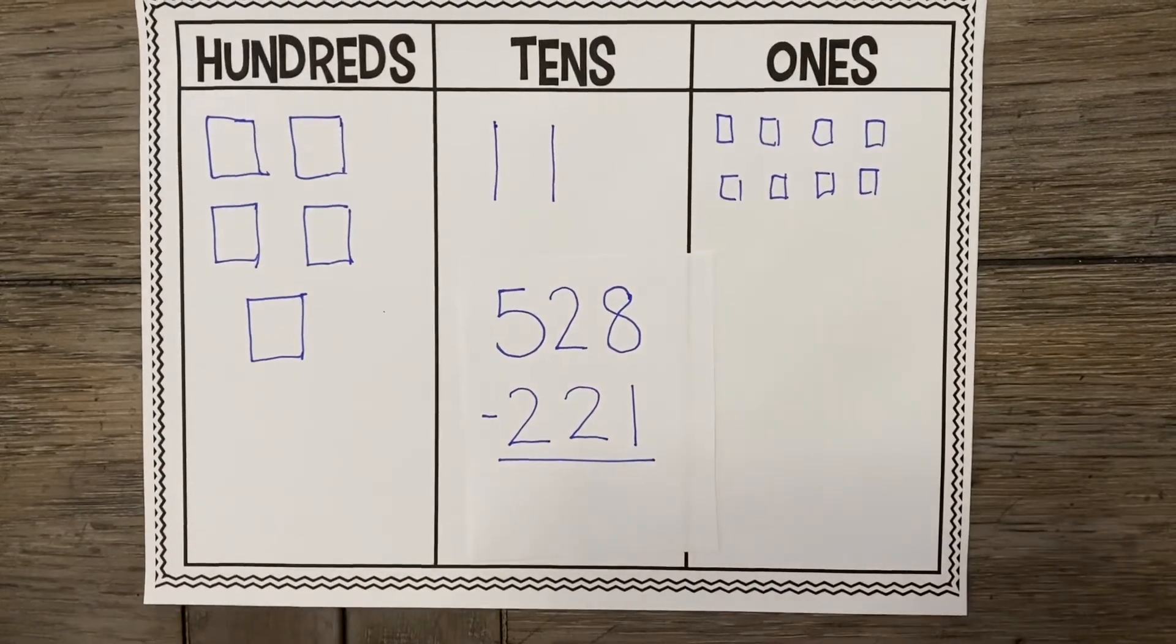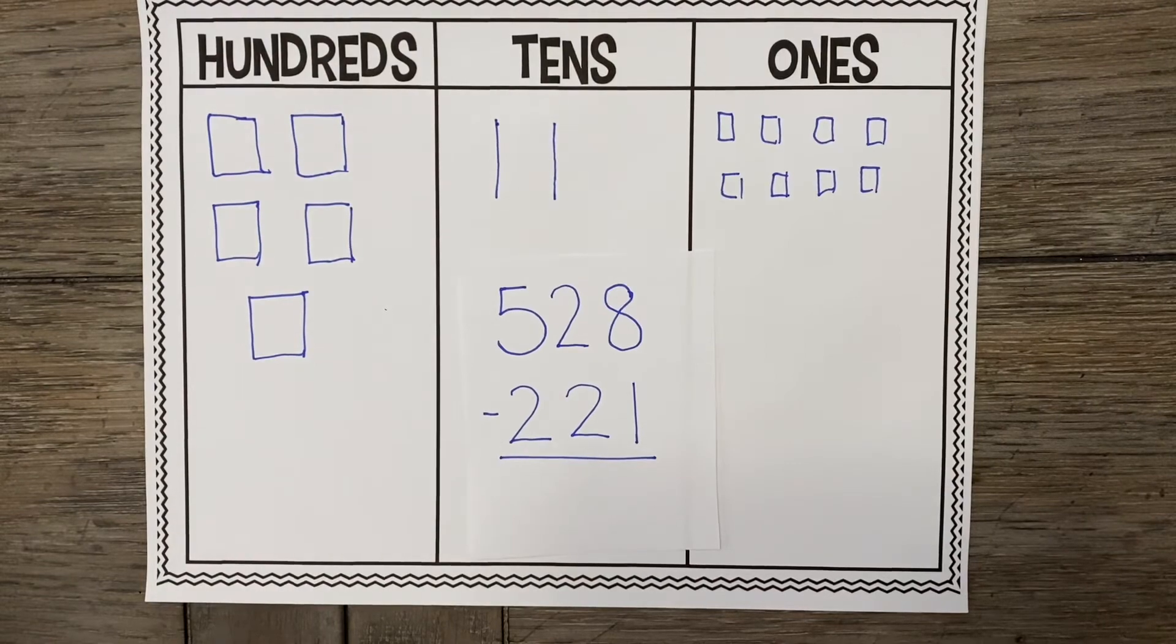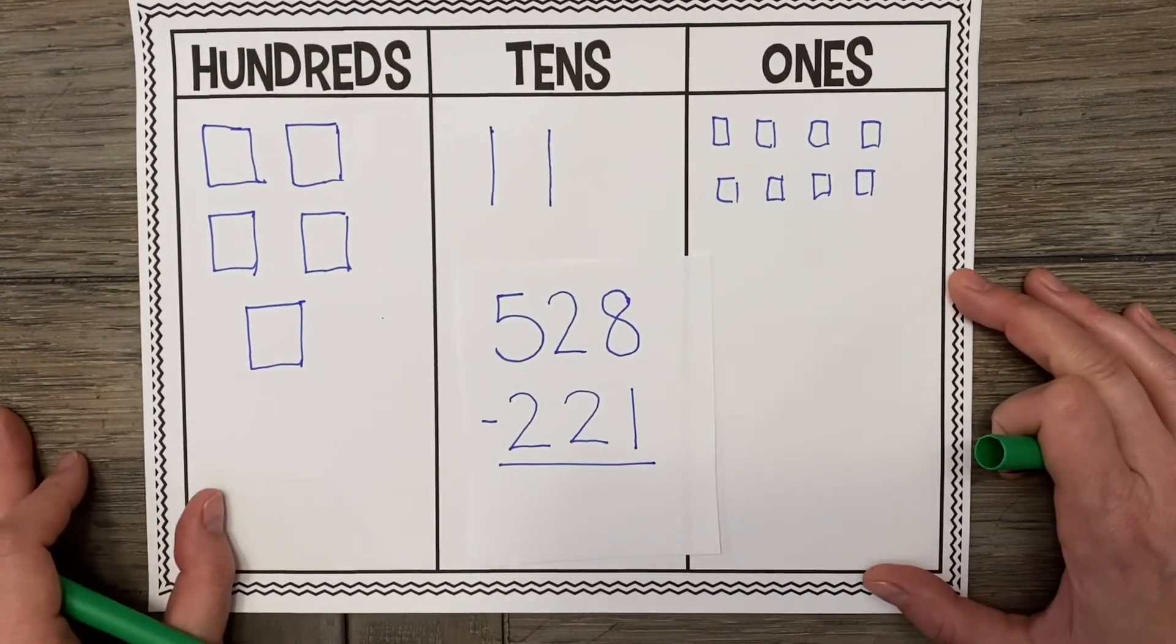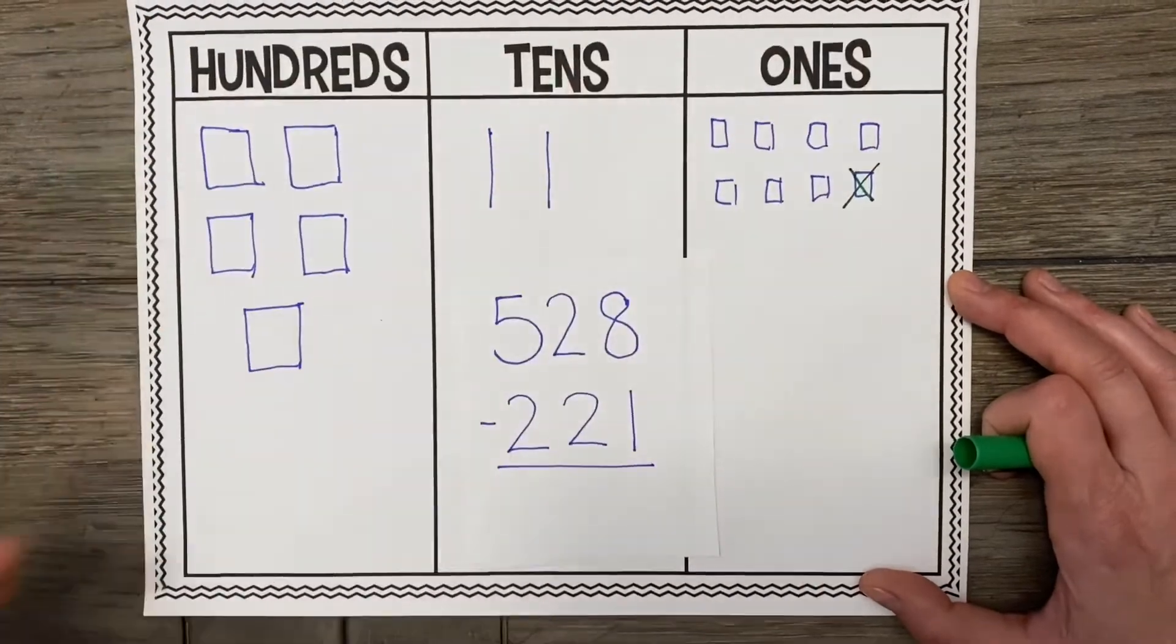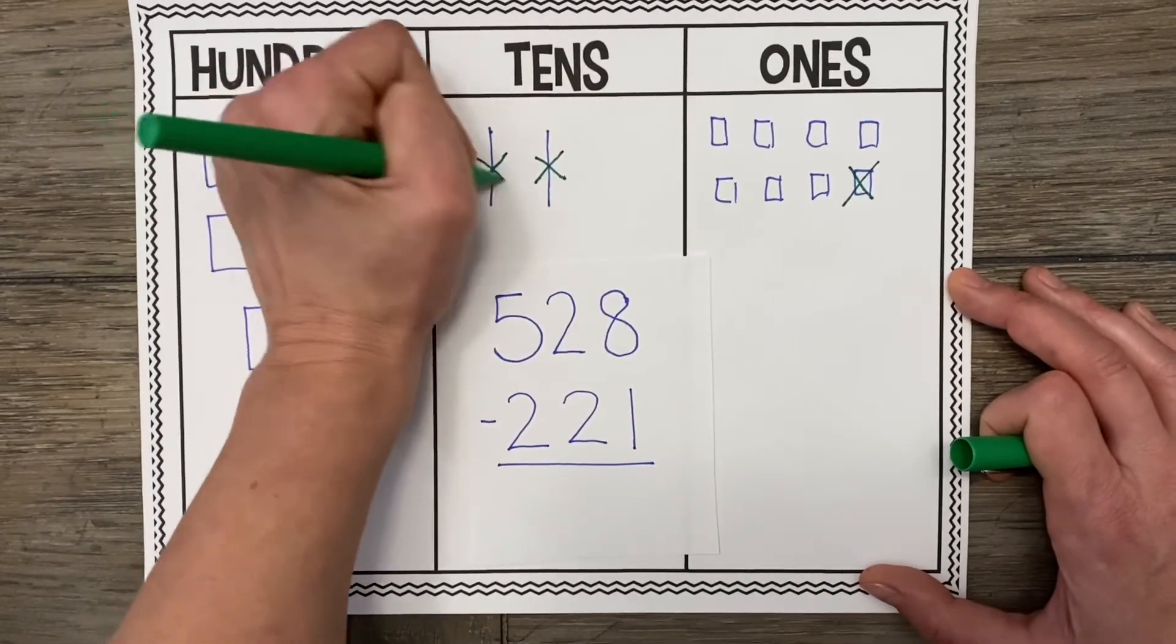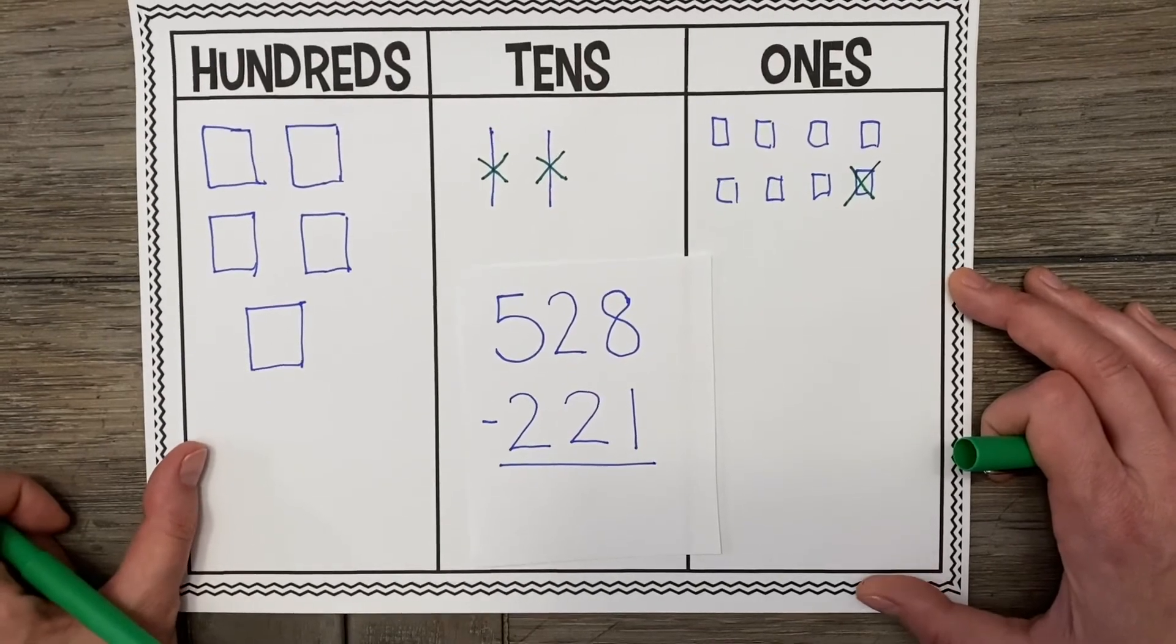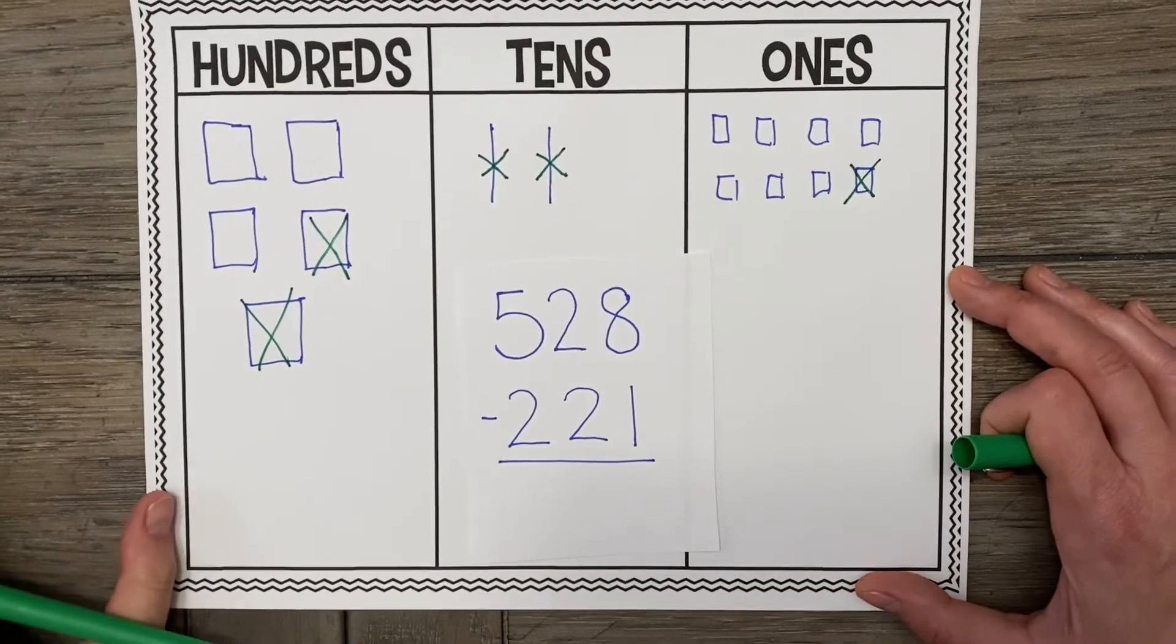Okay, so what do we need to do next? That's right. We need to subtract our 1s. So we're going to cross out some 1s. How many 1s do we cross out? That's right. We cross out 1 of our 1s. How many 10s are we going to cross out? You got it. 2 tens. Both of them. And how many 100s are we going to cross out? That's right. 2. Alright.